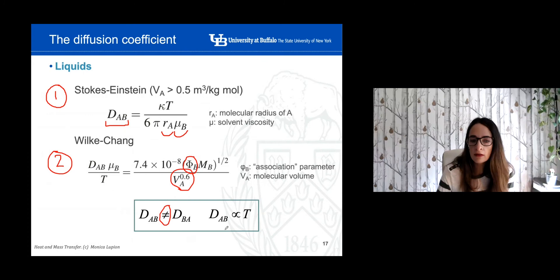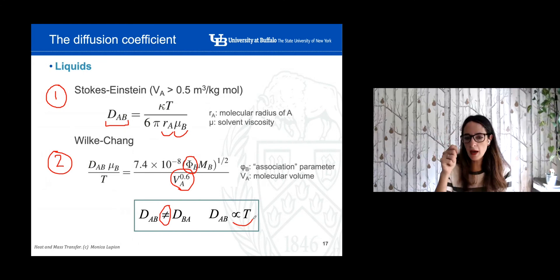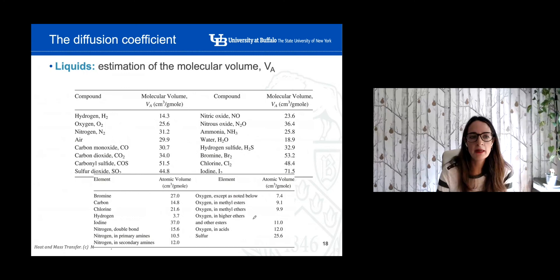Another difference between gases and liquids: in liquids, the diffusion coefficient is directly proportional to temperature — there is no power of 3.5 to apply. It is directly proportional to temperature. This table in your textbook gives molecular volumes for different compounds and chemicals commonly used in industry.